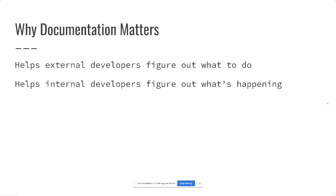On the opposite side, sometimes internal developers change or maybe the roadmap changes. Having documentation helps you keep an internal record of how things work and why things have changed over time. As you bring new people onto teams and move people around teams, they don't have to go ask the one person who's been on the group the longest how everything works.